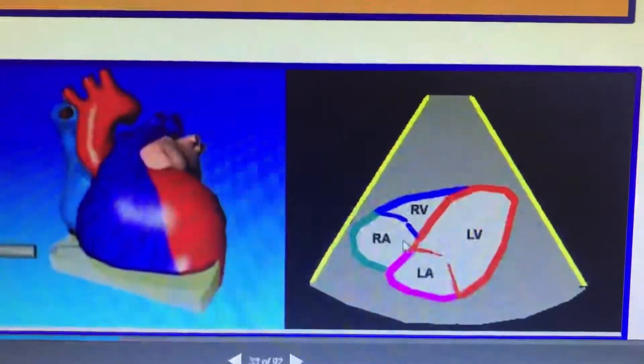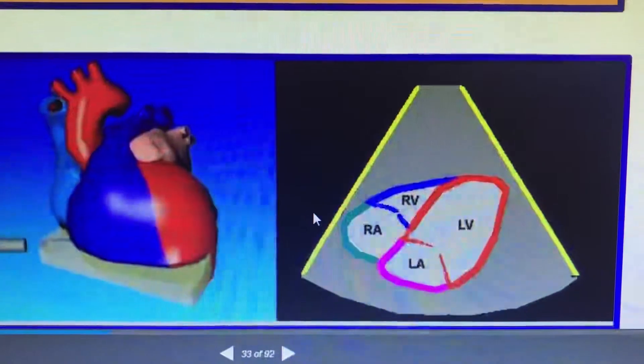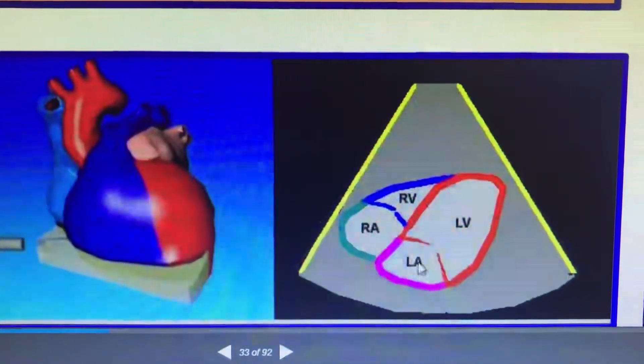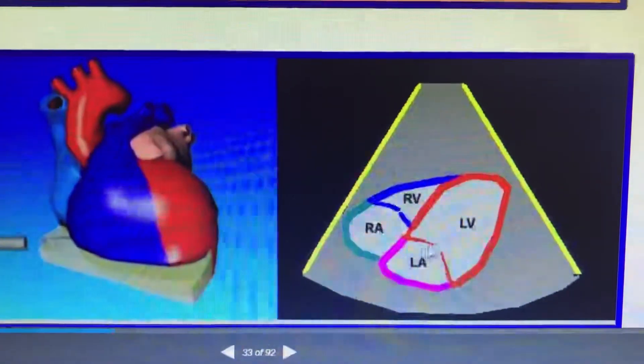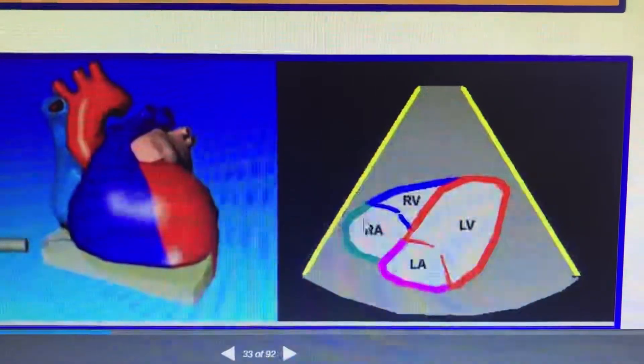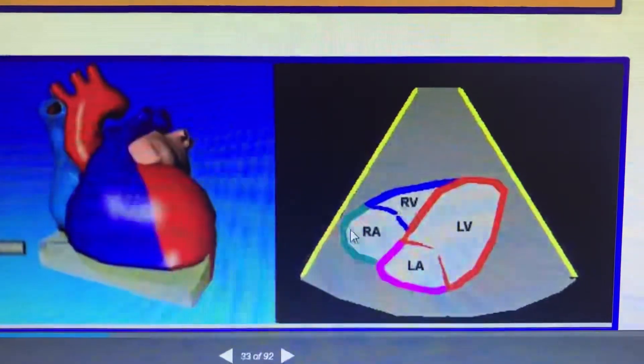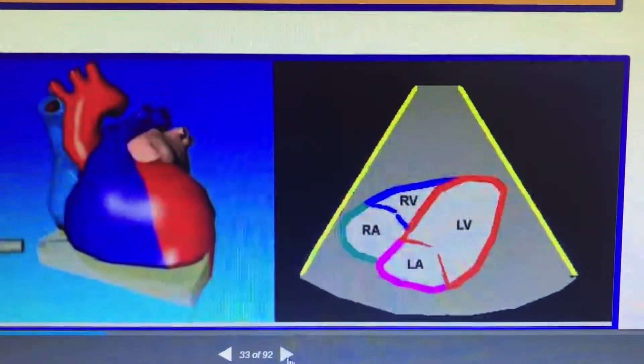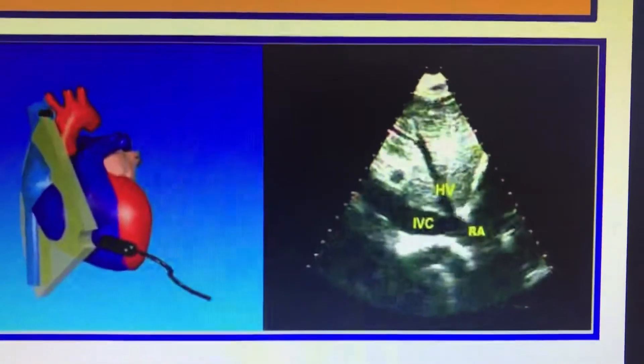This is the position for congenital heart disease assessment because you start from the IVC, RA, RV, then LV. Also, in emergency situations, this is the position where you will be seeing IVC dilatation and the response to respiration.